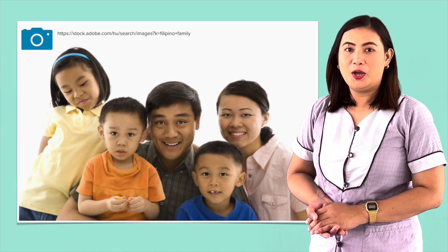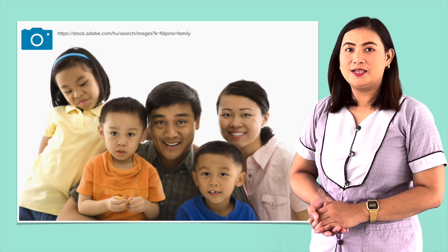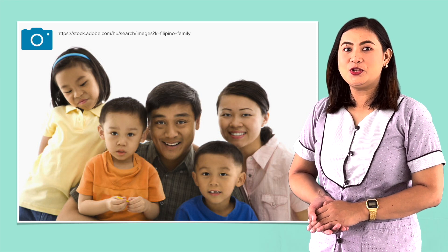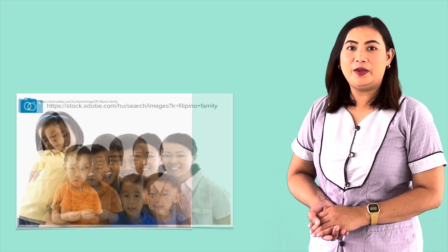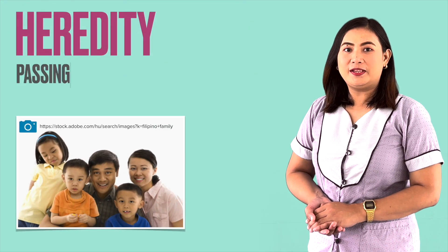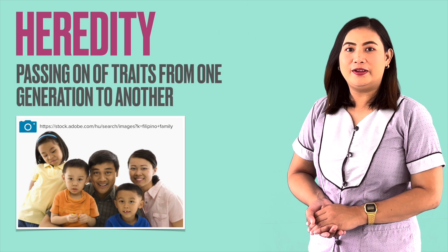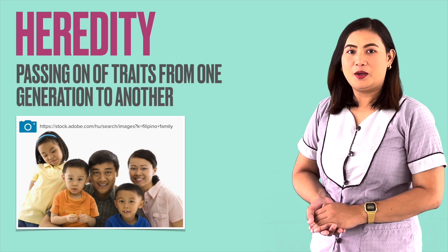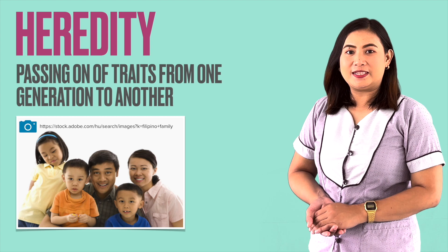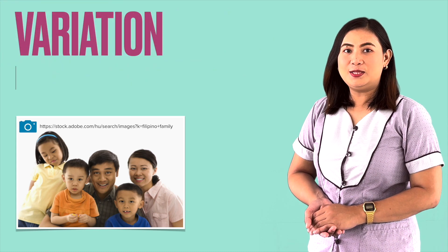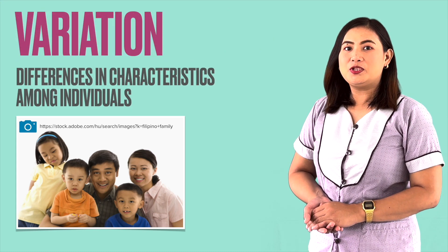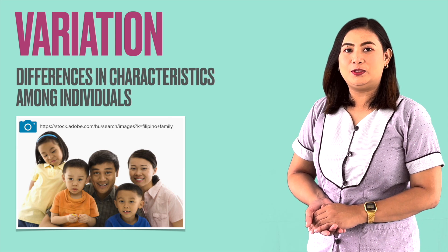Have you ever wondered, when you look at your parents, you can see features that you share with them? The sharing of physical attributes can be explained by heredity, where traits are passed on from parents to offspring. When you look at your siblings, each one of you is unique based on the combination of traits you acquired from your parents. That is known as variation, which demonstrates differences among individuals.